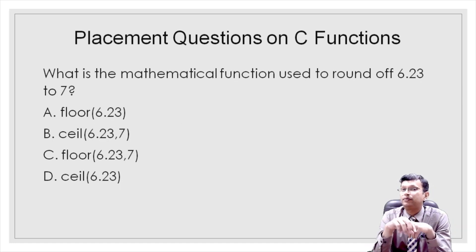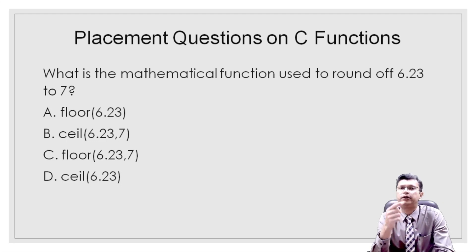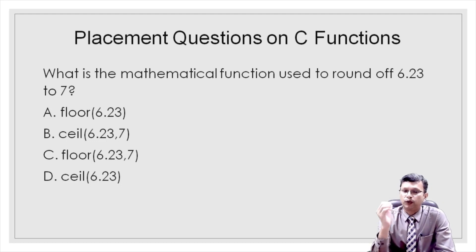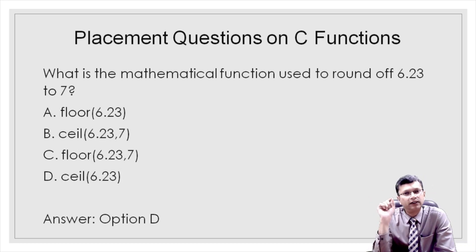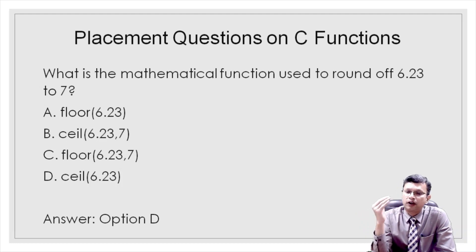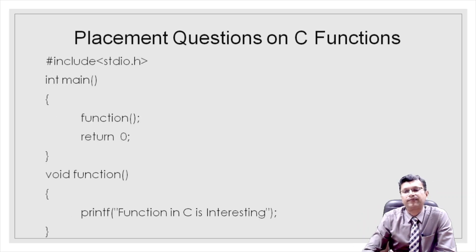Question four: what mathematical function is used to round off 6.23 to 7? The answer is option d — `ceil(6.23)`. The `ceil` function rounds a value up to the nearest integer, so `ceil(6.23)` returns 7.